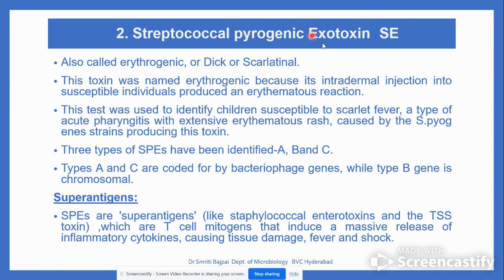Streptococcal pyogenic exotoxin (SPE) is also called erythrogenic or scarlatinal toxin. It was named because intradermal injection into a susceptible individual produces an erythematous rash. There are three types — SPE A, B, and C. These are called superantigens; they are T cell mitogens that induce massive release of inflammatory cytokines, causing tissue damage, fever, and shock.